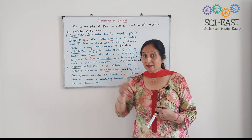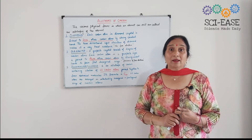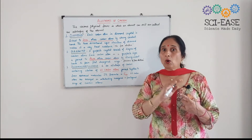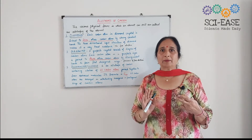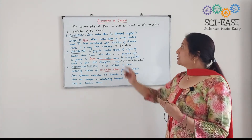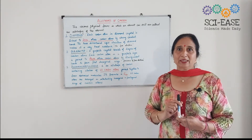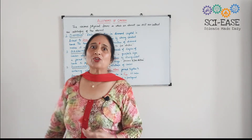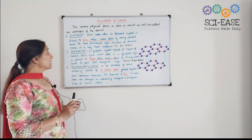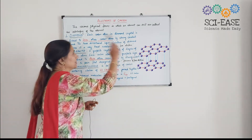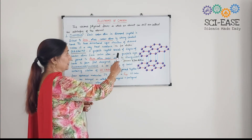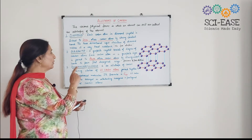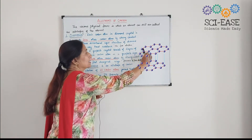This results in the formation of a three-dimensional rigid structure of diamond, which makes it a very hard substance. Diamond is hard due to its structure. It is a bad conductor of electricity because all four bonds are formed around each carbon atom, so there is no free electron in case of diamond — that is why it is a bad conductor of electricity. Now, the graphite crystal consists of layers of carbon atoms, and each carbon atom in graphite is joined to three other carbon atoms by strong covalent bonds to form flat hexagonal rings.